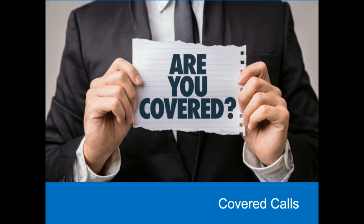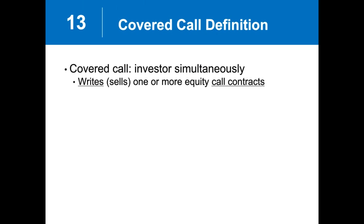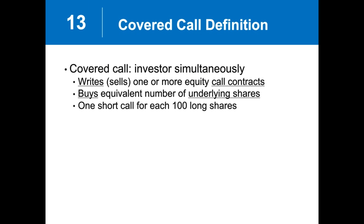Our first strategy is the covered call trade. A covered call includes two pieces: writing or selling a call contract and buying shares of stock. These ratios must match up — our obligation by selling the call option is to sell 100 shares of stock, which means we need to own those shares. For each 100 shares owned, you would sell one call contract. You are committing yourself to selling shares at a certain price, and in doing so, you are paid up-front option premium.